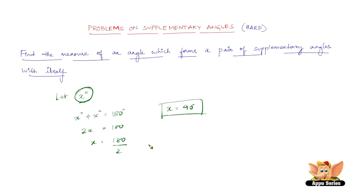So the supplement of x is x itself, or the supplement of 90 degrees is 90 itself, because 90 plus 90 gives you 180 degrees.